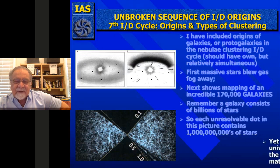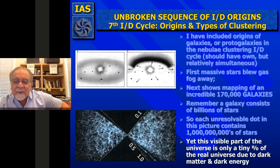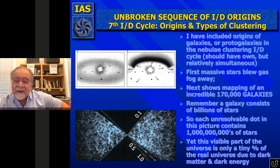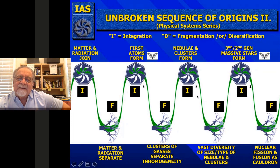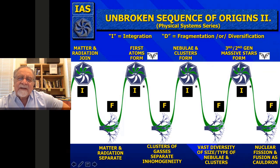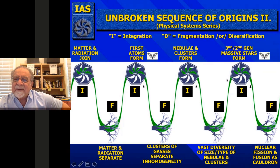Going back to our integration-diversification cycles, once you get different kinds of nebulae at different sizes, you'll get an incredible different set of stars and galaxies—that's fragmentation. But that fragmentation itself sets up the next integration, which is the different generations of stars.